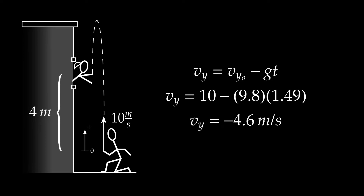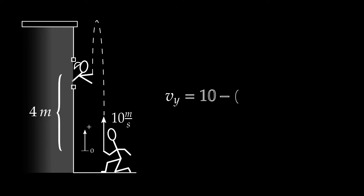I should pause and consider: does it make sense that I got a negative velocity? We should always do this when we get answers. It does make sense, because in my coordinate system I chose upward as the positive direction — therefore when the ring is on its way downward it has a negative velocity. That makes very careful, literal sense.